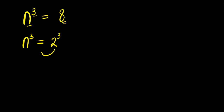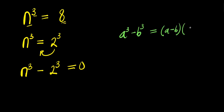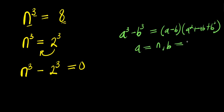What I do next is move this term over. I have n³ minus 2³ equals zero. Let's expand this using the identity: if you have a³ minus b³, this equals (a minus b) times (a squared plus ab plus b squared). Our a is n, while b is two.